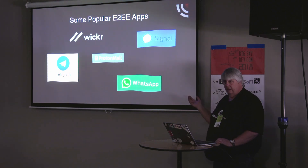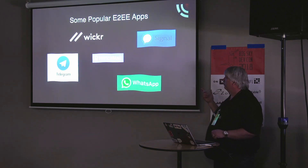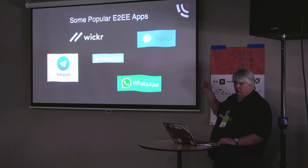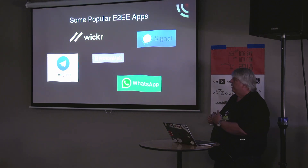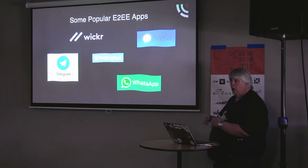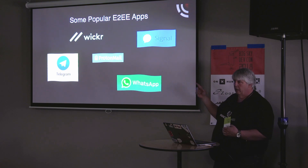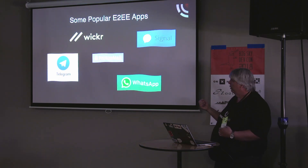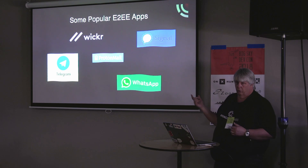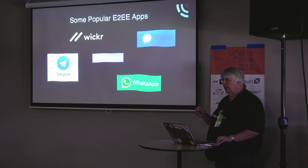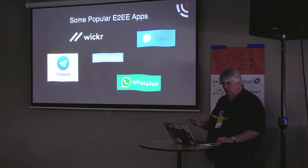End-to-end encryption is starting to gain a lot of traction. These are some companies you might have heard of: I have Signal installed on my phone — it's an end-to-end encrypted messaging app. WhatsApp is the same thing. Telegram is pretty much the same. Wickr provides end-to-end encrypted messaging, voice, and more. ProtonMail is an end-to-end encrypted email solution. These applications are starting to gain popularity as people become more aware of this issue.